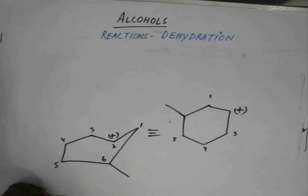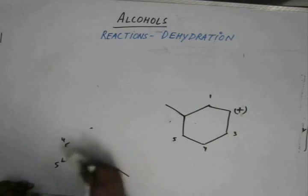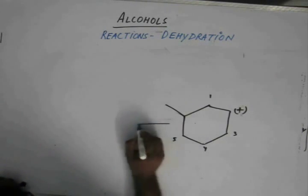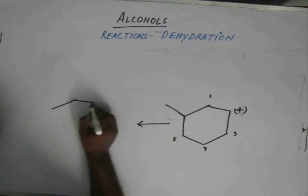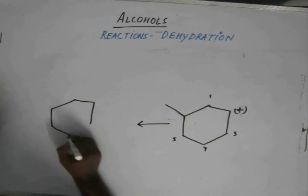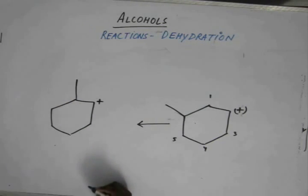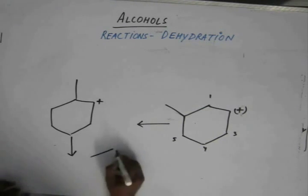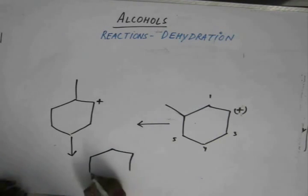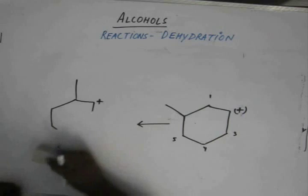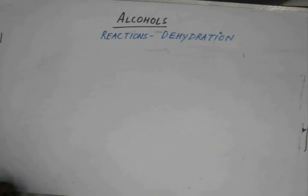We are left with this carbocation. Now, this carbocation rearranges to this one, and we get an alkene one like this. The main motive of this problem was to make you understand the concept of ring expansion.